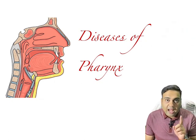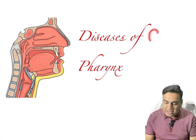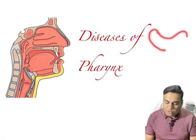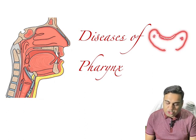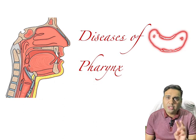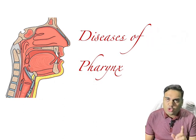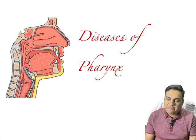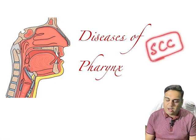Then the hypopharynx — three parts: the pyriform fossa, the post-cricoid region, and the posterior pharyngeal wall. Only three structures form the pyriform fossa. The most common malignancy of the pharynx is squamous cell carcinoma.